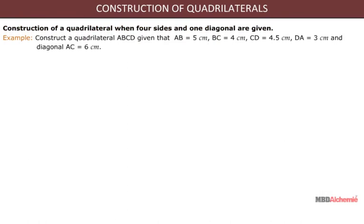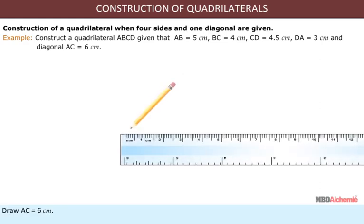Example: Construct a quadrilateral ABCD given that AB = 5 cm, BC = 4 cm, CD = 4.5 cm, DA = 3 cm, and diagonal AC = 6 cm. Solution: Draw AC = 6 cm. With A as center and radius 3 cm, draw an arc on one side of AC.